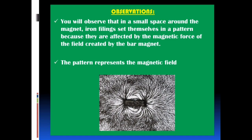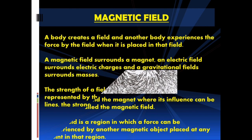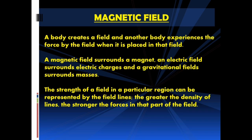The pattern represents the magnetic field. The space around the magnet where its influence can be detected is called the magnetic field. A field is a region in which a force can be experienced by another magnetic object placed at any point in that region. A body creates a field and another body experiences the force when placed in that field. A magnetic field surrounds a magnet; an electric field surrounds electric charges; and a gravitational field surrounds masses. The strength of a field in a particular region can be represented by field lines — the greater the density of lines, the stronger the forces in that part of the field.